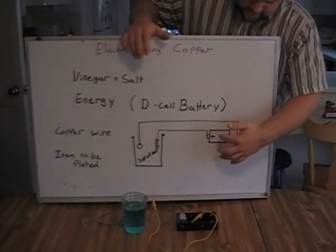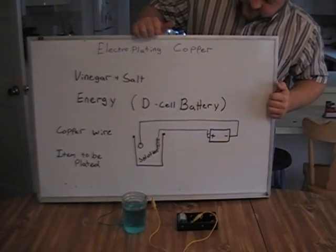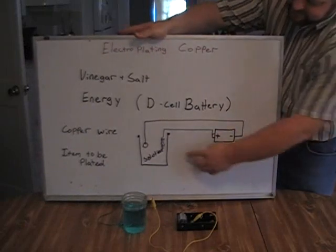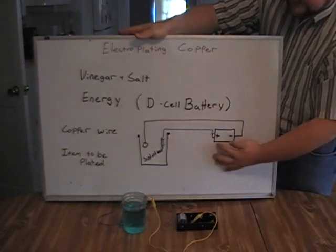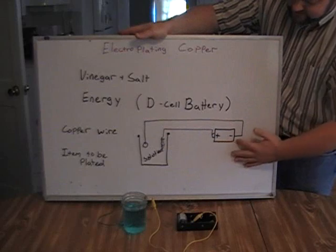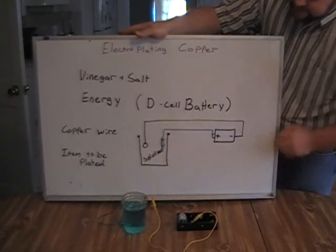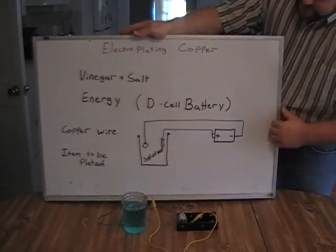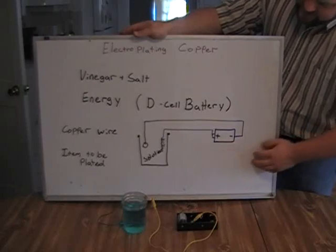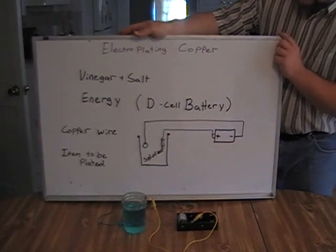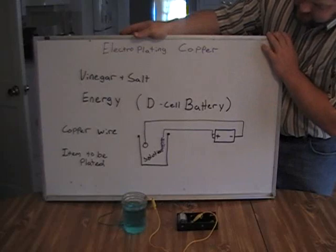We start out with, we have to get the copper solution going. We have the copper wire connected to the positive side of the battery. The negative side of the battery connected to our item to be plated. The electricity is flowing from the battery, producing copper ions from the copper metal.